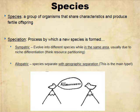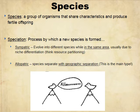When talking about species, these are organisms that interbreed to produce viable offspring. Mules, for example, are not a species — a horse and donkey can produce a mule, but mules are sterile and cannot reproduce. Speciation is the process by which a new species is formed. Sympatric speciation happens in the same area, usually due to niche differentiation — like resource partitioning, where warblers feeding at different times may eventually become new species.